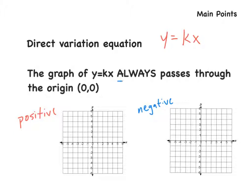It is very important that any direct variation equation always passes through the origin of (0, 0). If it does not pass through the origin of (0, 0), then it is not a direct variation equation.